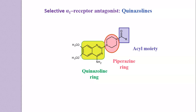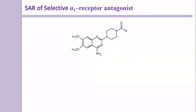Under Structural Activity Relationship, we discuss the modifications made to this Quinazoline ring, piperazine ring, and acyl moiety, and how because of these modifications it will affect the action of the drug. About the Structural Activity Relationship, you must know the general structure. Here is the general structure, and going directly to the Structural Activity Relationship, here we see the structure of a few important drugs.